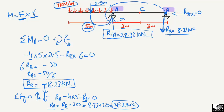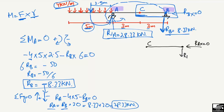Now to find the normal force, shear force, and moment at point C, we take only the right-hand portion of the beam (from C to B), as it is the more simplified portion. In this free body diagram, point C is on the left and the support at B is on the right. RBx = 0, and RB = 8.33 kN acting vertically downward.